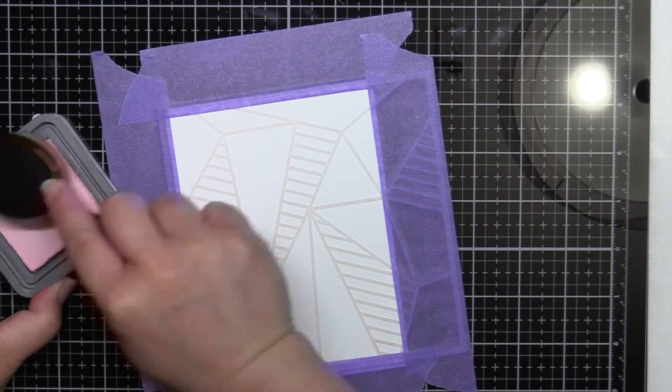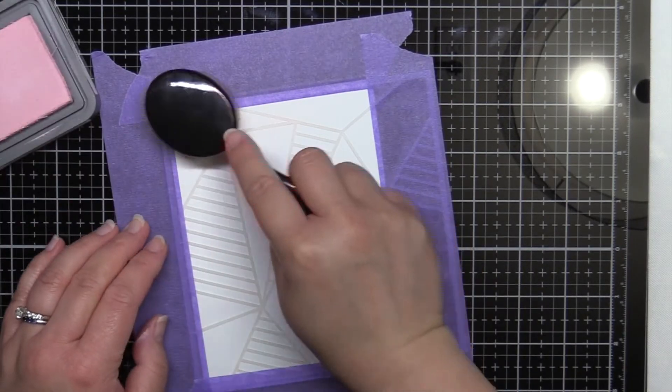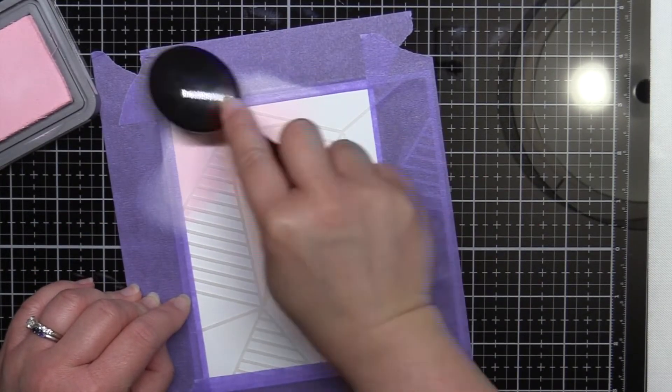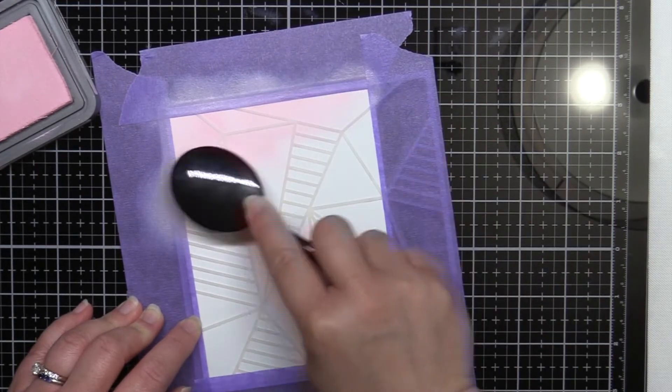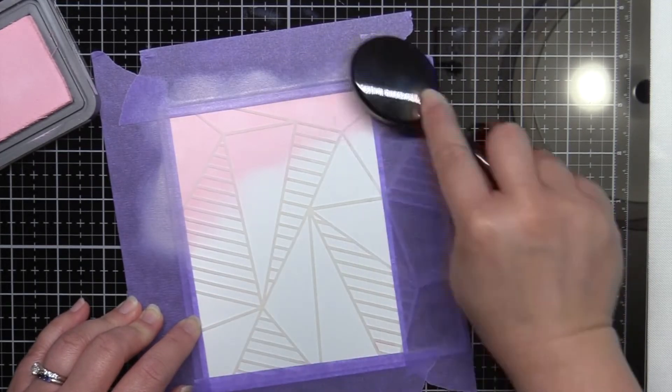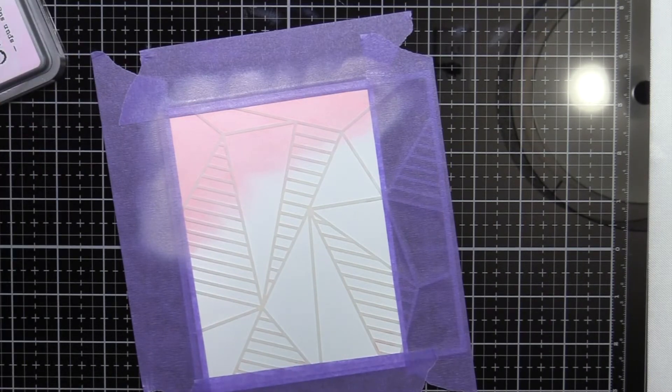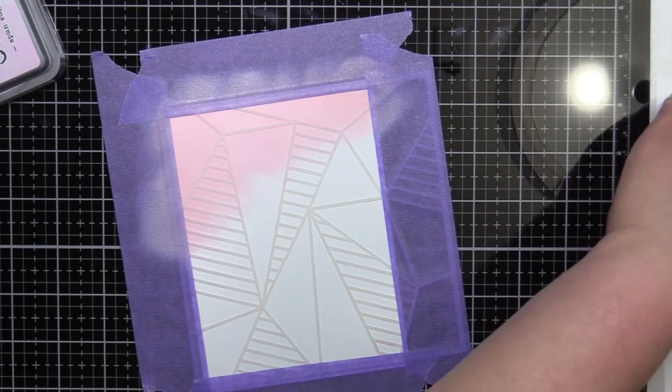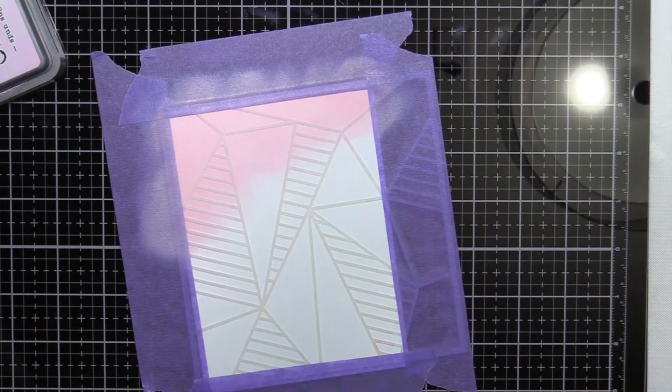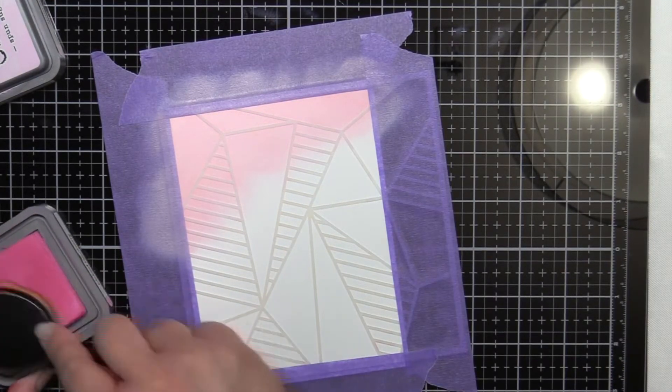Next I use a blending brush to apply Spun Sugar, Picked Raspberry, Abandoned Coral, and Candied Apple Distress Oxide inks over my stencil. I have a piece of scrap paper off to the right and in between colors I blend off onto the scrap paper and then I'm ready to move to the next color. I also go back and forth to the previous colors as needed to blend the colors better.